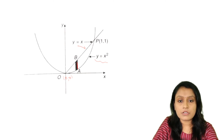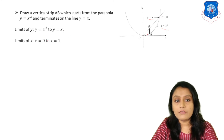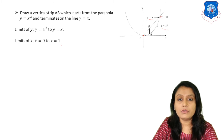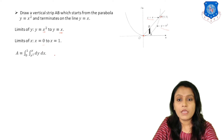We draw a vertical strip. The strip starts from Y equals X squared and ends at Y equals X, so the limits of Y are X squared to X. Moving this strip, X changes from 0 to 1, so the limits of X are 0 to 1. The area is given by the double integral: integration from X squared to X and 0 to 1, of dy dx.